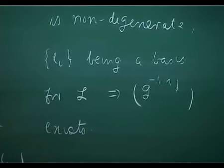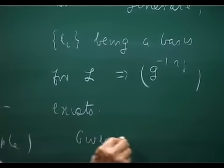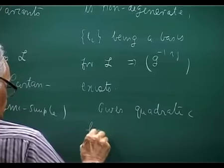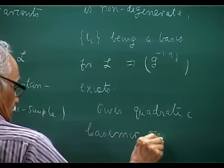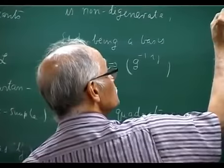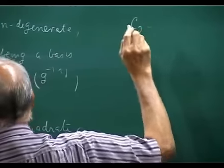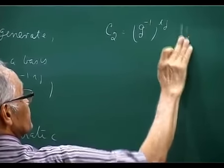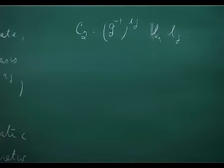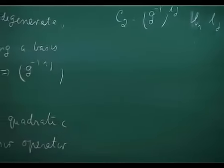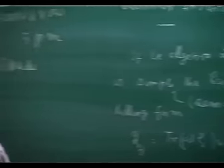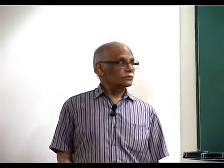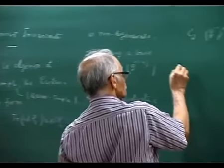From here you could construct the quadratic Casimir operator C_2, which is G^{-1 ij} times L_i L_j. This is commuting with all the elements of the Lie algebra, so becomes a multiple of the identity in any irreducible representation. It can be used to label the irreducible representation.